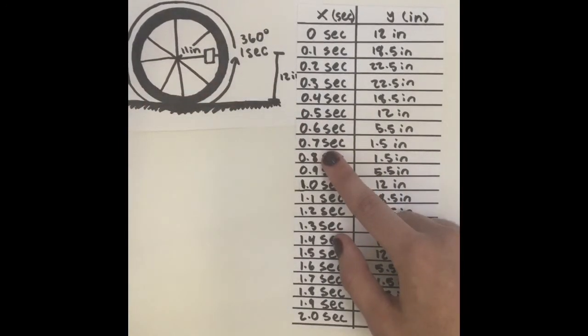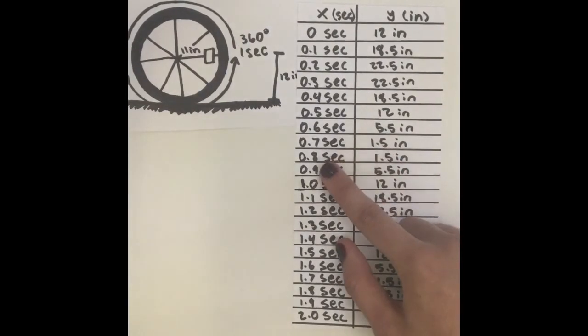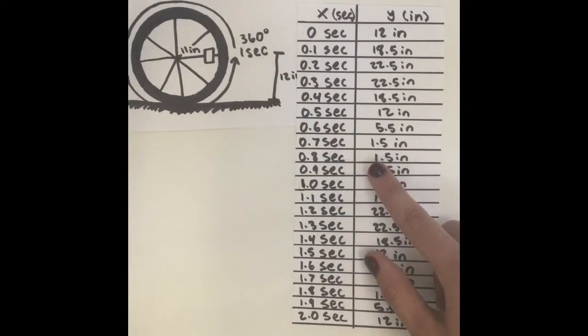At 0.7 seconds, the reflector is at 1.5 inches. At 0.8 seconds, the reflector has reached the bottom of the wheel and is starting to come back up, meaning it is at 1.5 inches again.